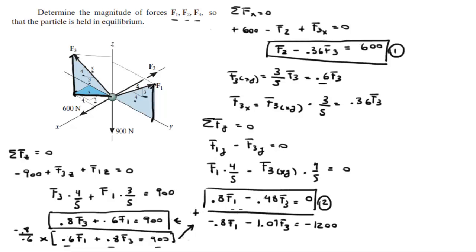And then I'm going to add these two equations. I'm going to add it with equation 2, and as you can see, the F1's cancel out. And these two add up to be negative 1.55F3 is equal to negative 1,200. So if you solve for F3, you get that F3 is equal to 776 Newtons.